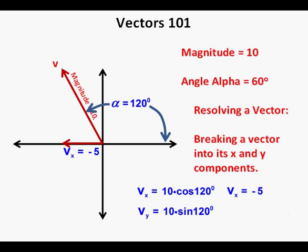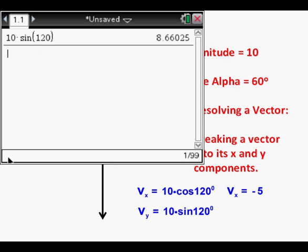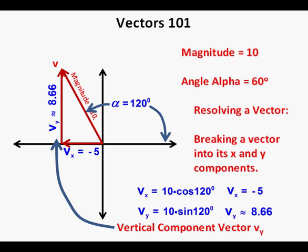Looking now at the vertical component vector, we have v sub y equals 10 times the sine of 120 degrees. Entering this expression into our calculator and pressing enter, we get about 8.66. This is really 10 times the square root of 3. So we write v sub y is approximately equal to 8.66. We can now draw the vertical component vector v sub y. These items we call rectangular components.